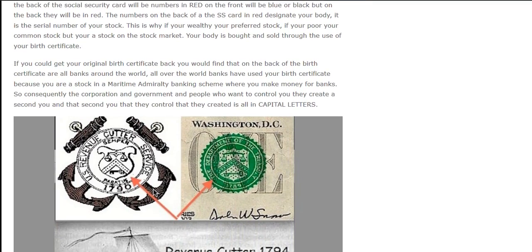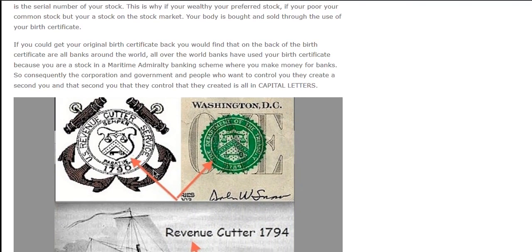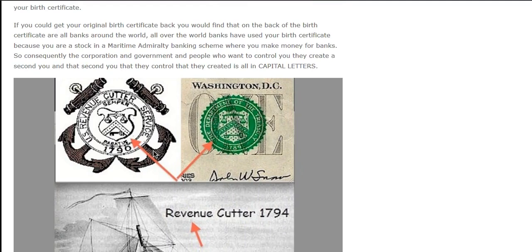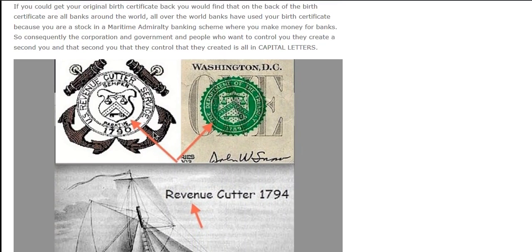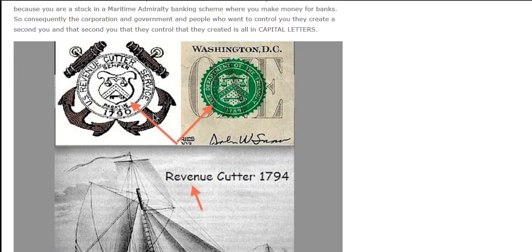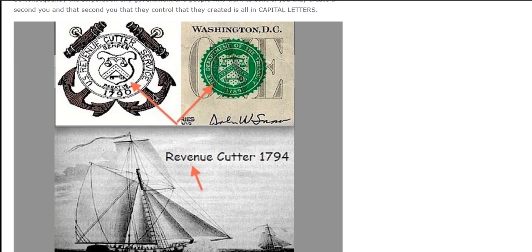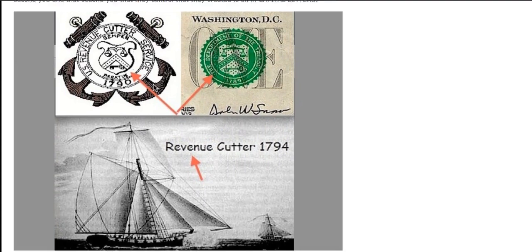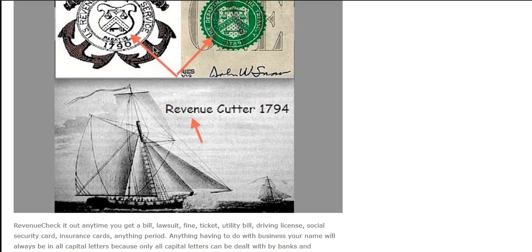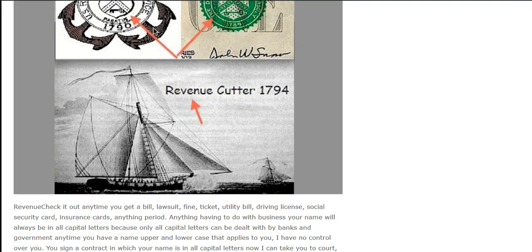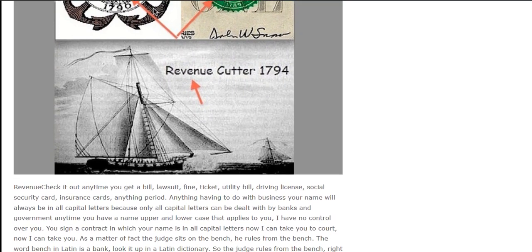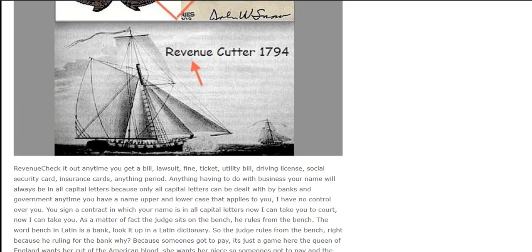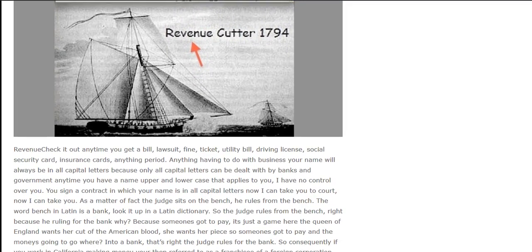Your body is bought and sold through the use of your birth certificate. If you could get your original birth certificate back, you would find that on the back are all banks around the world — banks have used your birth certificate because you are a stock in a maritime admiralty banking scheme where you make money for banks. Consequently, the corporation, government, and people who want to control you create a second you — and that second you, which they control, is written in all capital letters.